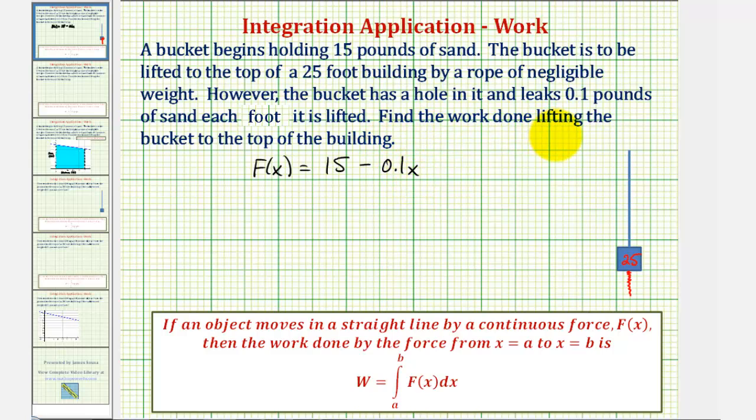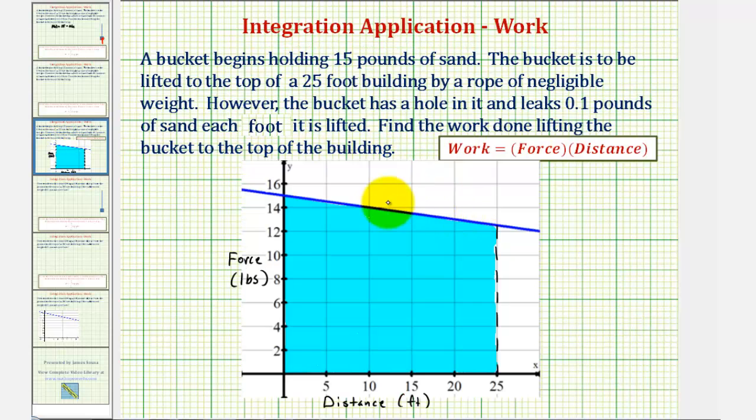And now before we find the work done lifting the bucket to the top of the building, let's look at the graph of this function on the coordinate plane. It's graphed here in blue. Notice the horizontal axis would be distance in feet. The vertical axis would be force in pounds. And since work is equal to force times distance, if we find the area under the function and above the horizontal axis over this closed interval, it would be the amount of work to lift the bucket to the top of the building.